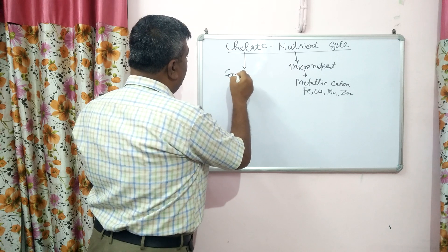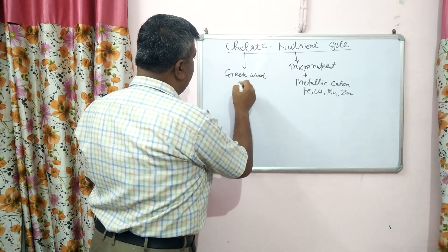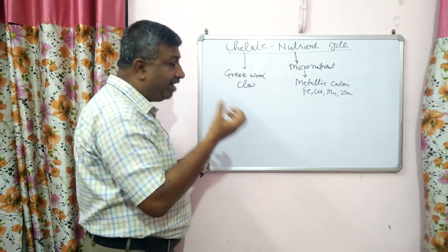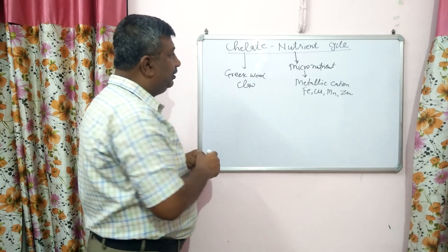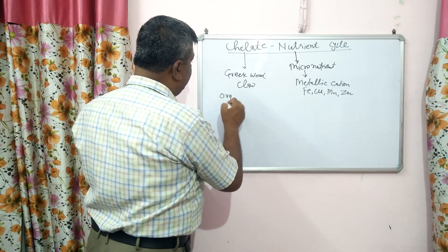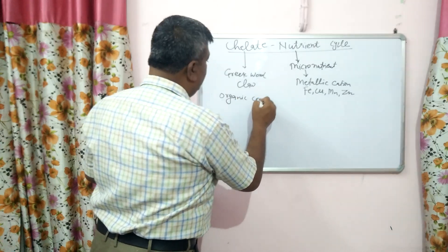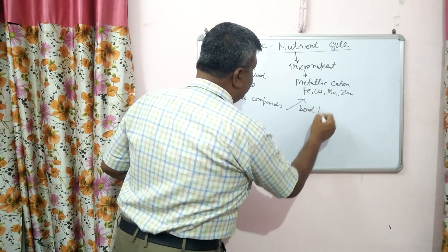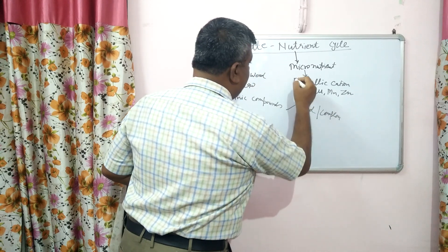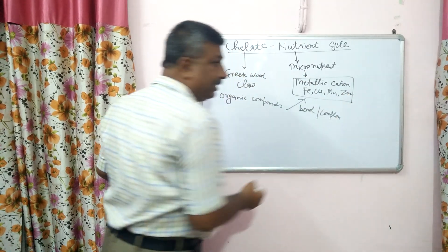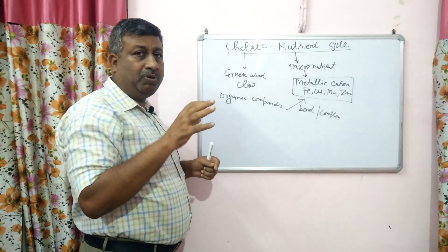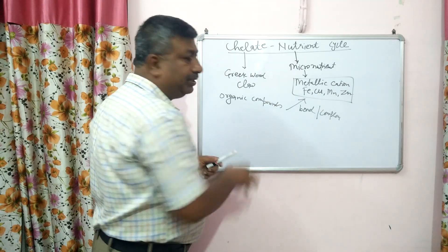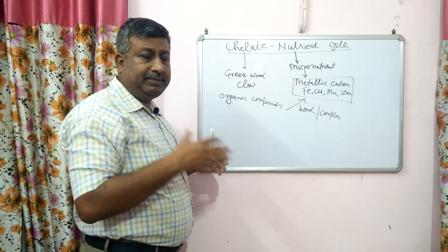Actually, 'chelate' is a Greek word which means 'claw' — which holds or fixes something. So chelates are organic compounds which make bonds or complexes with these metallic cations. The metallic cations are now fixed within this organic compound structure. This compound is a soluble compound, and thus increases the availability.